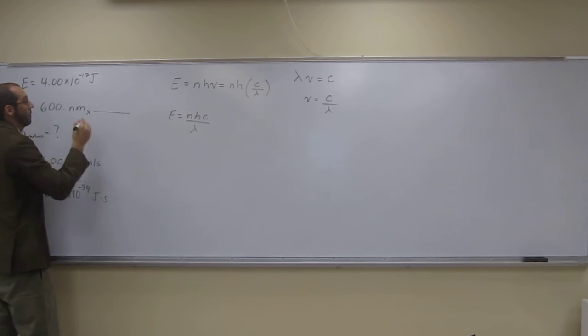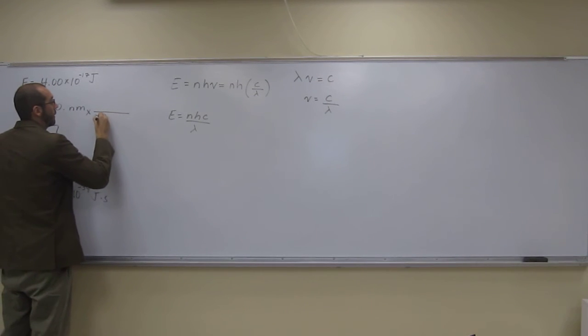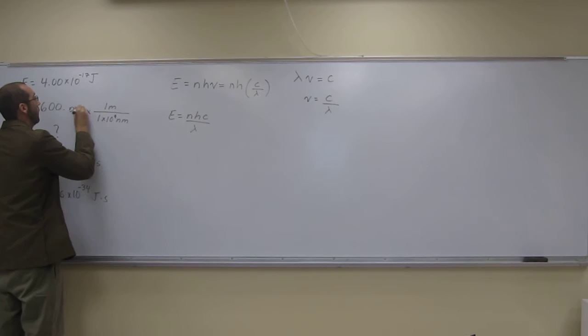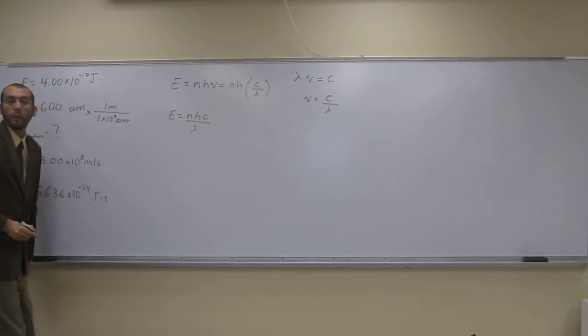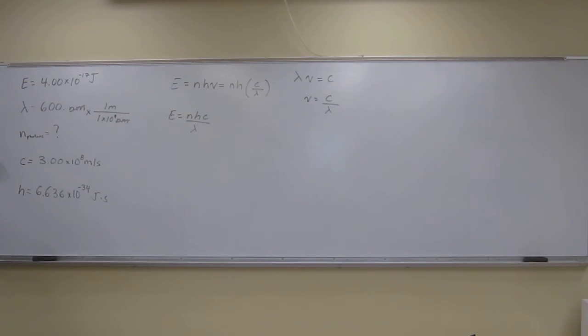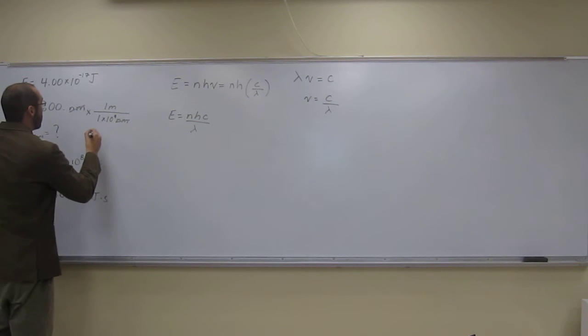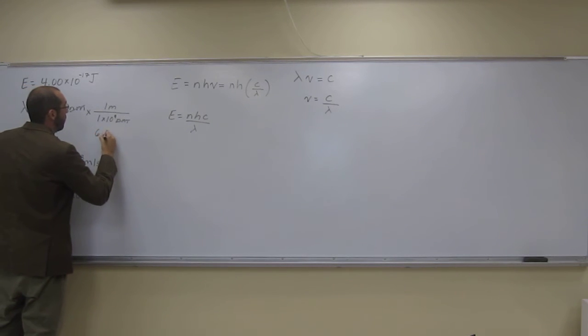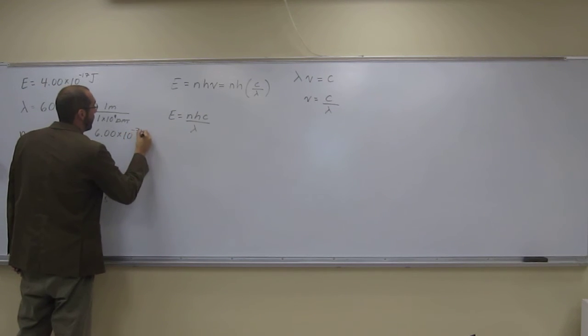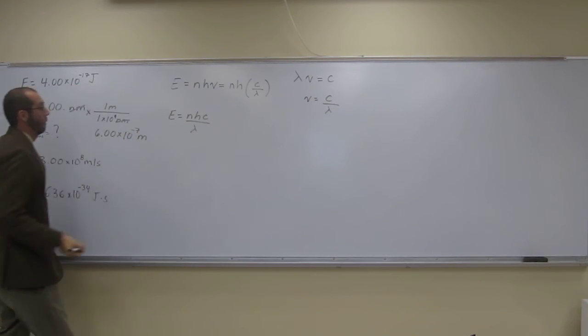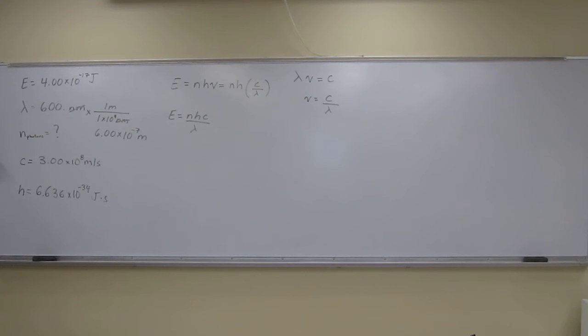...we're going to multiply this. Well, down here it's going to be one times ten to the ninth, of course, nanometers per one meter. That's going to cancel and cancel like that. Okay? So, when we do that, we should get 6.00 times ten to the negative seven meters. Like that. Okay?